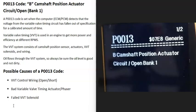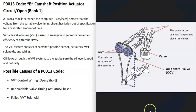Today I'm talking about a P0013 code — what it is and how you go about fixing it. A P0013 code is a B camshaft position actuator circuit open, bank one. Many vehicles nowadays have what's called variable valve timing, which can help the vehicle get better horsepower at different RPMs and improve efficiency. When you get a P0013 code, the computer is seeing a problem with this system, mainly with the actuator.